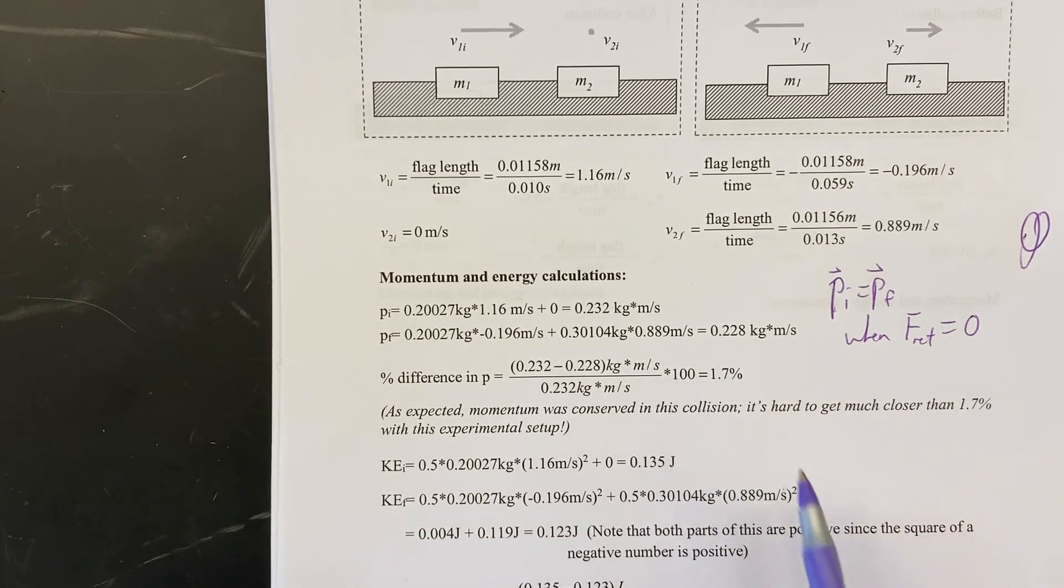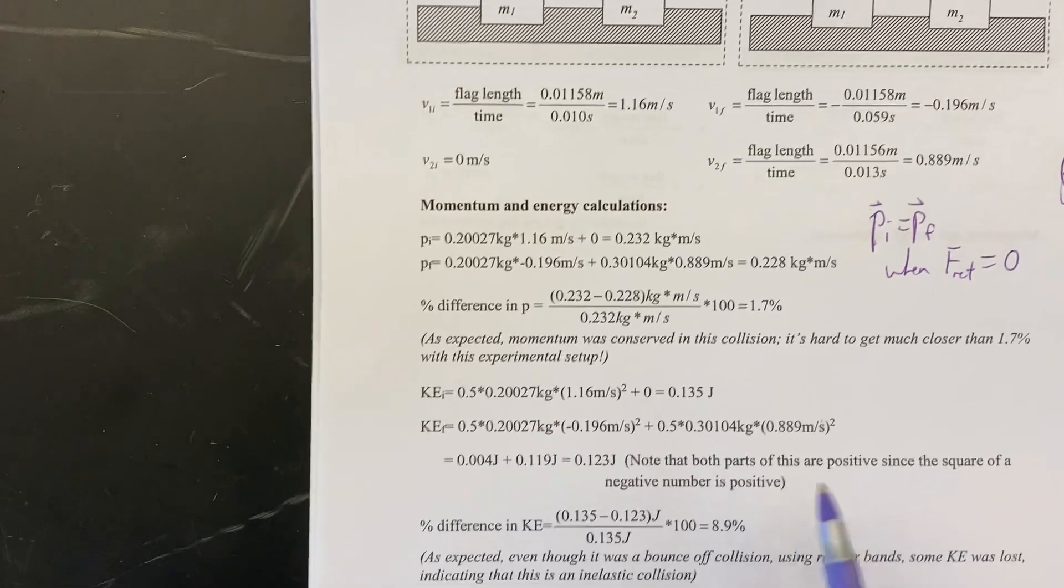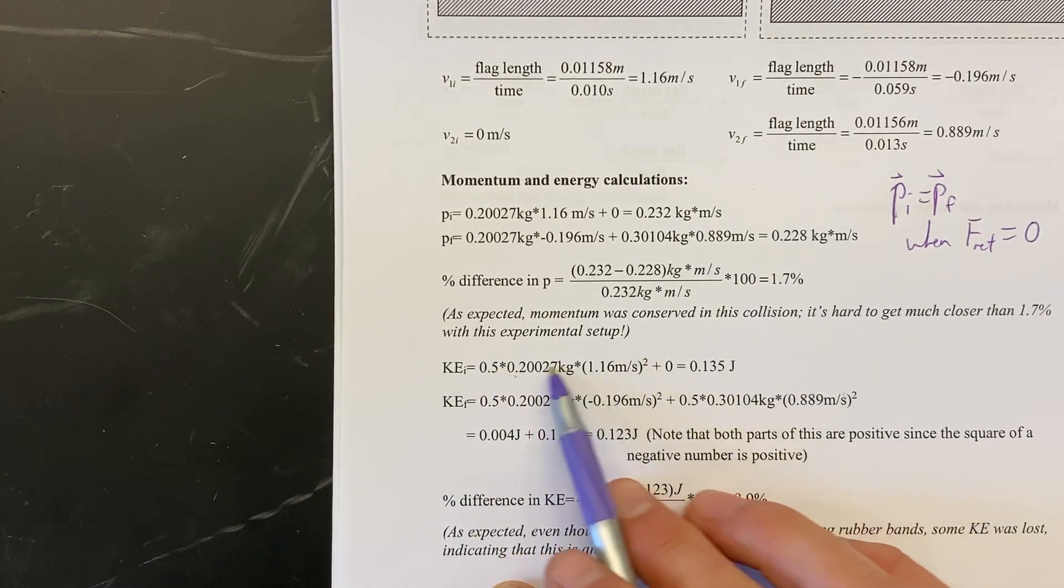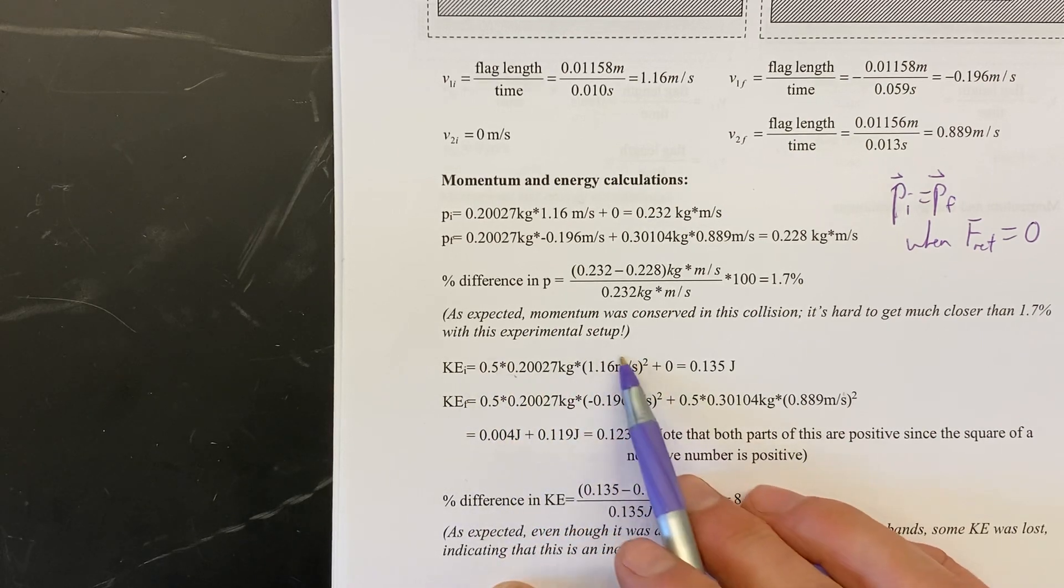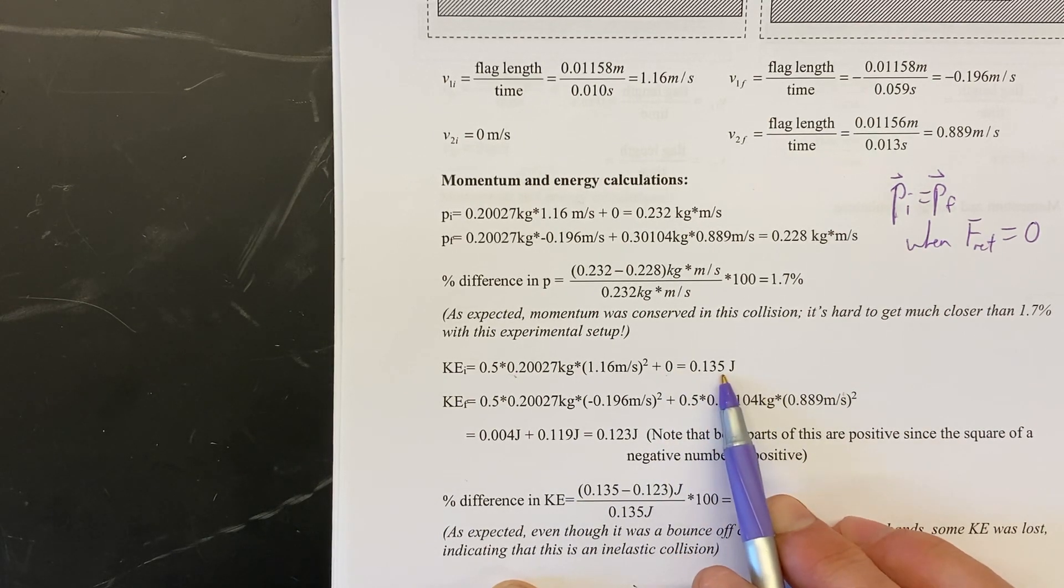Okay, for an experimental result getting within two percent, that's fabulous. All right, now what about kinetic energy? So the kinetic energy of glider one prior to the collision is this much, one half mv squared. The second glider was not moving initially so it has no kinetic energy initially and that is this much kinetic energy.